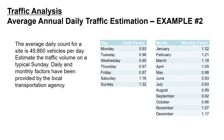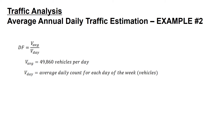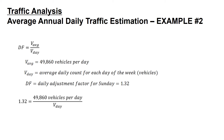In example 2, we're told the average daily count for a site is 49,860 vehicles per day. We're asked to estimate the traffic volume on a typical Sunday, using the same daily and monthly factors provided by the local transportation agency. We start with our daily factor equation, which is equal to the average volume divided by the volume for that particular day. Our average volume, which is our AADT, was given as 49,860 vehicles per day, and we're looking for the average daily count for Sunday.